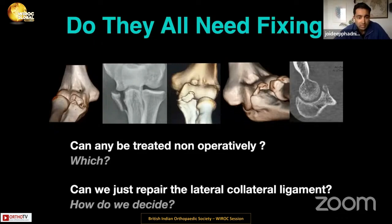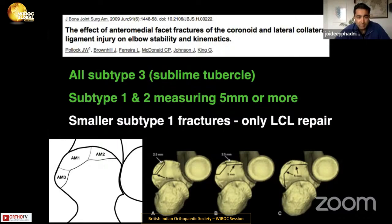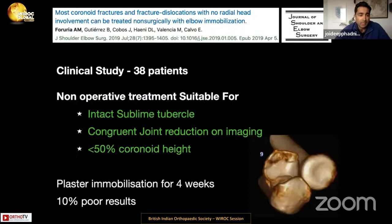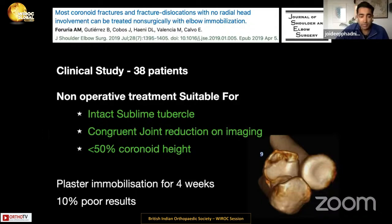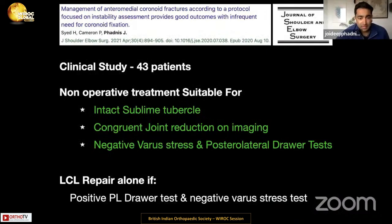Do all coronoid fractures need fixing? Clearly not. A biomechanical study suggested that all subtype 3 fractures — those involving the sublime tubercle and fractures five millimeters or more in height off the anterior medial coronoid — required fixation, while smaller fractures could be treated with ligament repair only. A clinical study from Spain also demonstrated that fractures involving the sublime tubercle needed fixation, and if the joint was incongruent on imaging it needed fixation. However, many fractures with congruent joints and smaller coronoid heights could be treated non-operatively, though poor results occurred when lateral ligament repair was neglected.